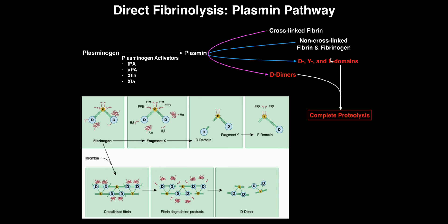All of those — the D-domain, the Y-fragment, the E-domain, and the D-dimers from the destruction of cross-linked fibrin — are eventually going to become completely proteolyzed and recycled to amino acids. All of these are called fibrinolysis products, because they're the products of fibrinolysis. Breaking that word down, it literally means the destruction or cleavage — lysis — of fibrin.